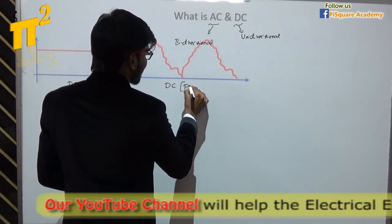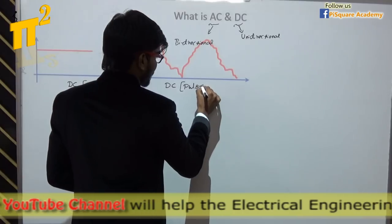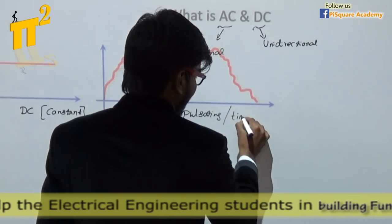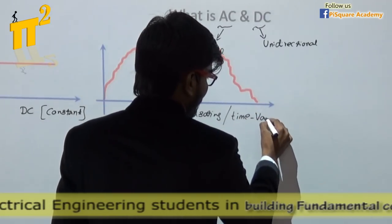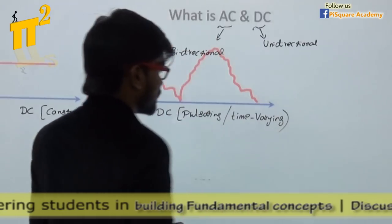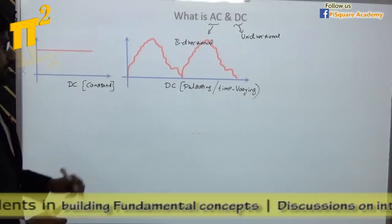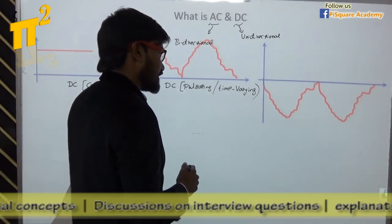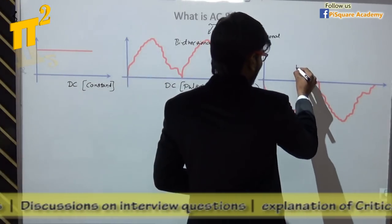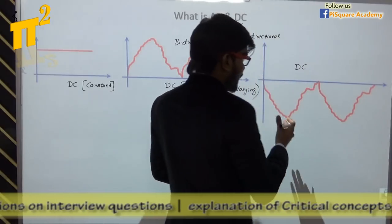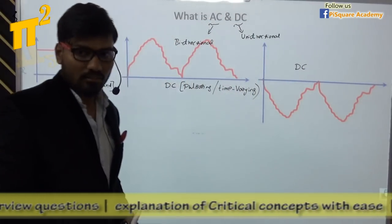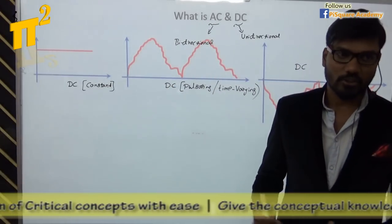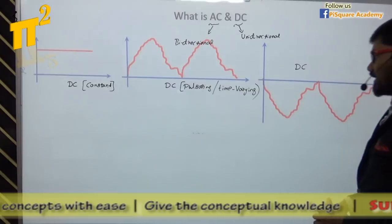DC means unidirectional, so it is also having only one direction. Of course, it is pulsating in nature — pulsating or you may say time varying. Next, what about this one? It is also a DC — also unidirectional. It is only having a negative direction, just one direction, negative direction. Unidirectional — it is also a DC signal.